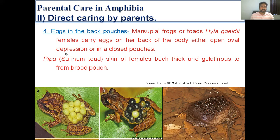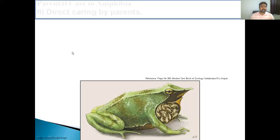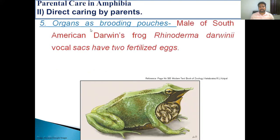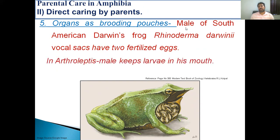The next way of parental care is using organs as a brooding pouch. The examples are the male of the South American Darwin's frog, Rhinoderma darwinii. In this case, the vocal sac serves as a brooding pouch. And in the case of Arthroleptis, the tadpoles are present in the mouth of the male. So here, the organs act as a brooding pouch.